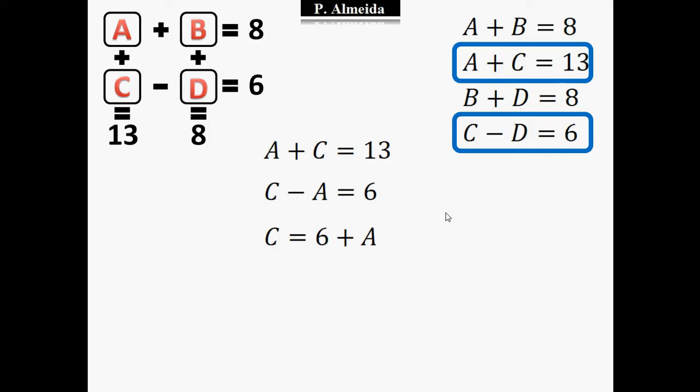So I can say that C equals 6 plus A. And I'm then going to put C on the other equation, and I get A plus C, 6 plus A, so A plus 6 plus A equals 13. And by doing this, I can get that 2 times A equals 13 minus 6, which gives me 7. And therefore, A and D are going to be equal to 7 divided by 2, which is 3.5.